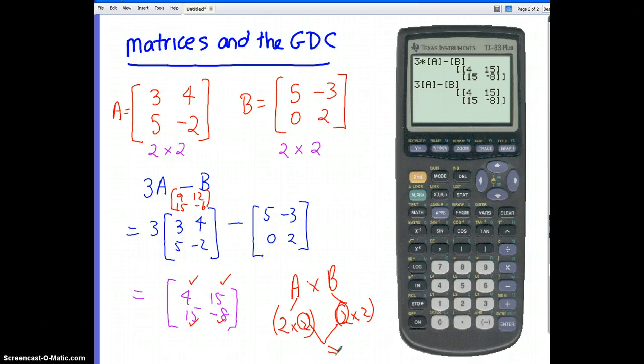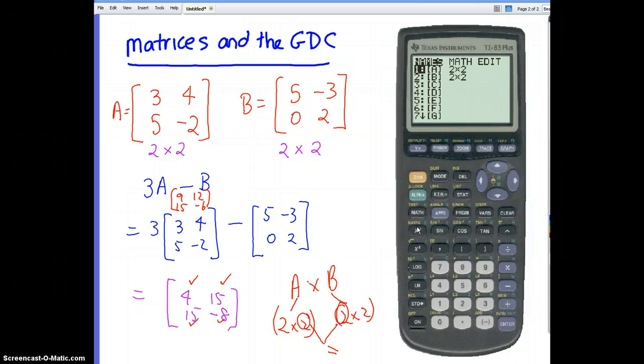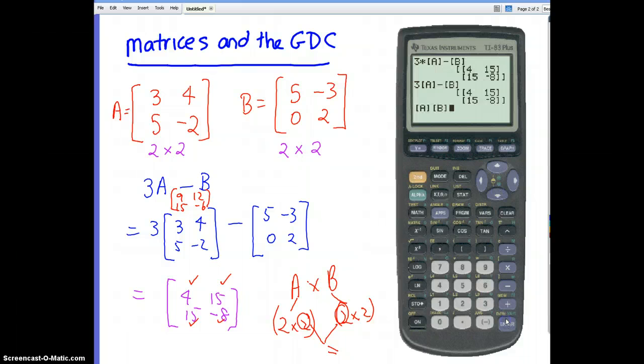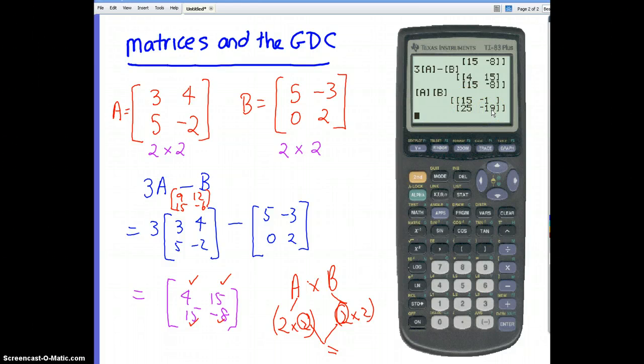So if we want to do matrix A times B, all we have to do is matrix A, go into the menu again, matrix B, enter. There we go, and there's our product: 15, -1, 25, -19.